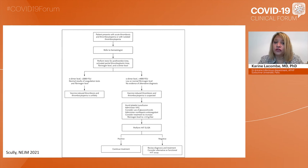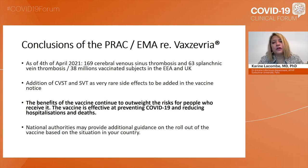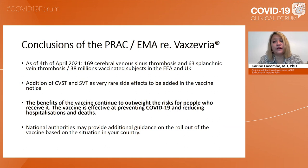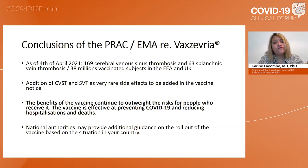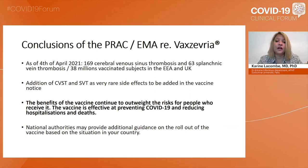The conclusions of the PRAC from the European Medicines Agency regarding Vaxzevria are that, as of the beginning of February, 169 cerebral venous sinus thromboses and 63 splanchnic venous thromboses have been noted over almost 40 million vaccinated subjects in Europe and the UK. In addition to those very rare side effects, this should be added to the vaccine notice, but the benefits of those vaccines continue to outweigh the risk for people who receive it. The vaccine is effective in preventing COVID-19.